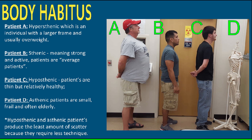Body habitus: Patient A is a hypersthenic patient, which is an individual with a larger frame and is usually overweight. Patient B is asthenic — strong and active — and is considered the average patient. Patient C, hyposthenic, is thin but relatively healthy. Patient D, asthenic, is small, frail, and often elderly. Hyposthenic and asthenic patients produce the least amount of scatter because they require less technique.